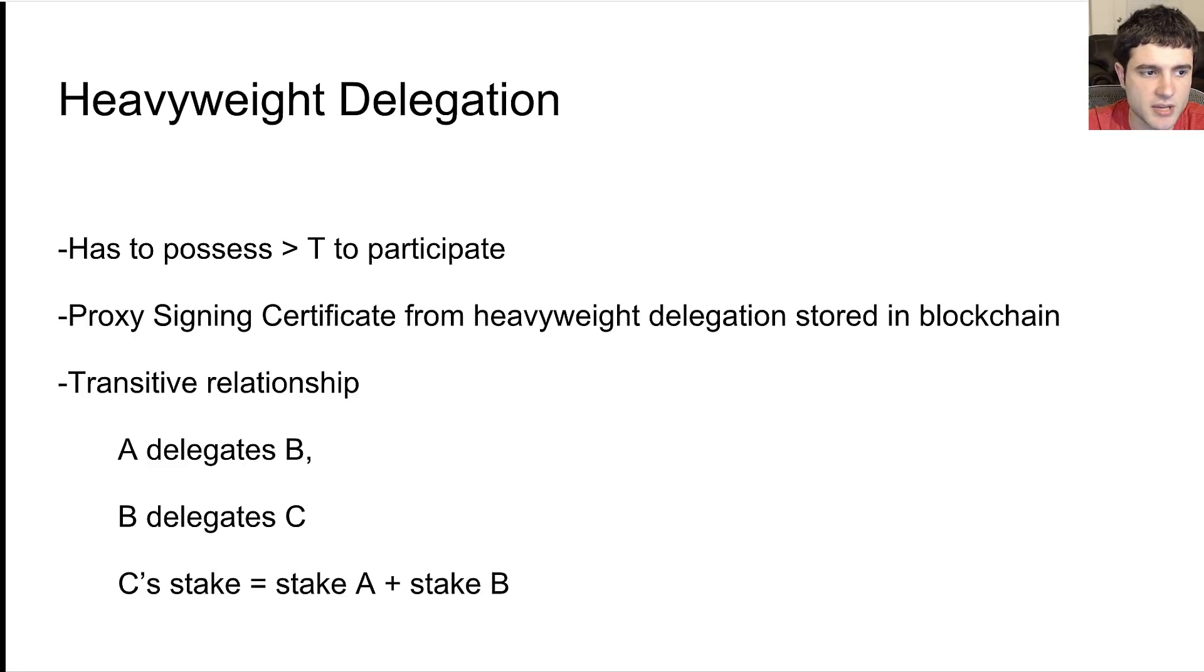What's interesting about this is that it's a transitive relationship. That is to say, if A delegates to B and then B delegates to C, C's stake is actually the sum of their coins plus stake of A plus stake of B. You can create some chain of delegation such that whenever a block gets created, it may have to be passed along through multiple people before you eventually find who has the right to create this block.